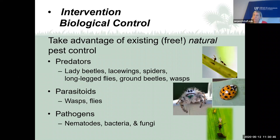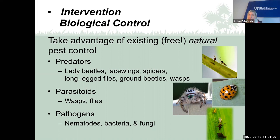The second approach is biological control. We have good guys in our landscape and vegetable gardens doing work for us — natural predators, parasitoids, and pathogens. Predators include ladybugs, lacewings, spiders, long-legged flies, and ground beetles — they seek out and eat other insects. Parasitoids such as parasitic wasps and flies lay their eggs inside an insect and parasitize it. Pathogens are good fungi, bacteria, and nematodes that attack bad insects.